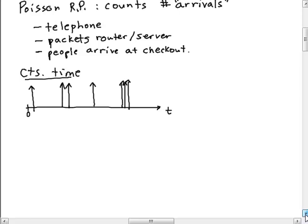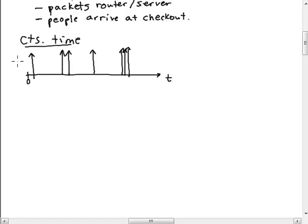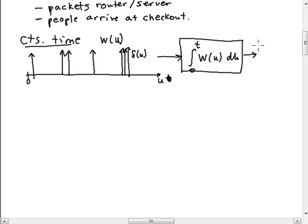The Poisson process is just an integral of this process. We're going to send this into an integral from time zero until time t. If this one was called w(u) and these were impulse functions with variable u, then I'd integrate w(u) over u and the output would be my Poisson process X(t).